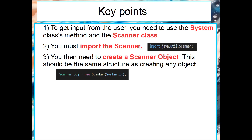To create a Scanner we need to use the same structure as creating any object. We write the Scanner type, then the object name — you can call it anything. Then we say new and then the Scanner class, which should match that type name, and inside the brackets we need to use the System class with the input method. That allows us to create a Scanner where we can get input.